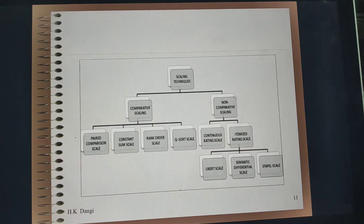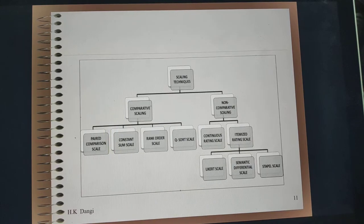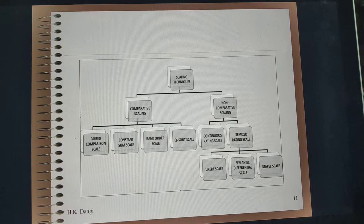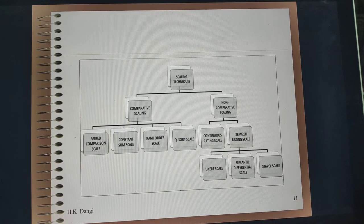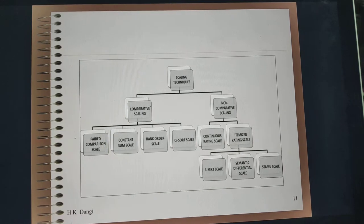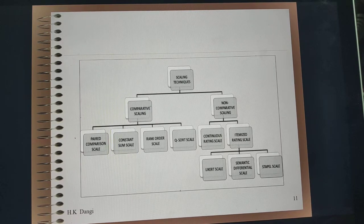Further, scales can be differentiated into comparative scaling and non-comparative scaling techniques. In comparative scaling I will talk about paired comparison, constant sum scale, and rank order scale, and also give some idea about Q-sort. Non-comparative scaling includes continuous rating scale and itemized rating scale, which can be further defined as Likert scale, semantic differential scale, and staple scale. If you are comparing two or more objects at one point in time it is a comparative scale; if you are studying one object in detail it is non-comparative scaling.